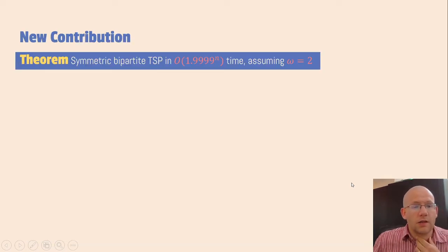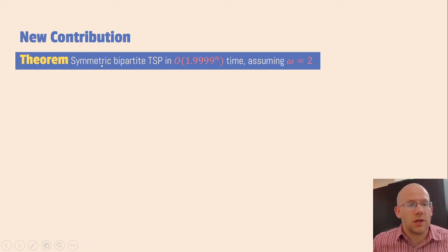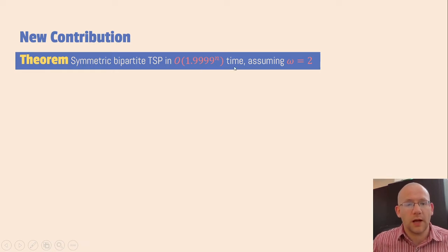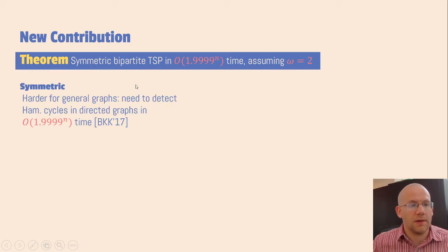In this talk we do get some progress, but there are some caveats. The result is that symmetric bipartite TSP can be solved in 1.9999 to the power n time, assuming omega is 2.